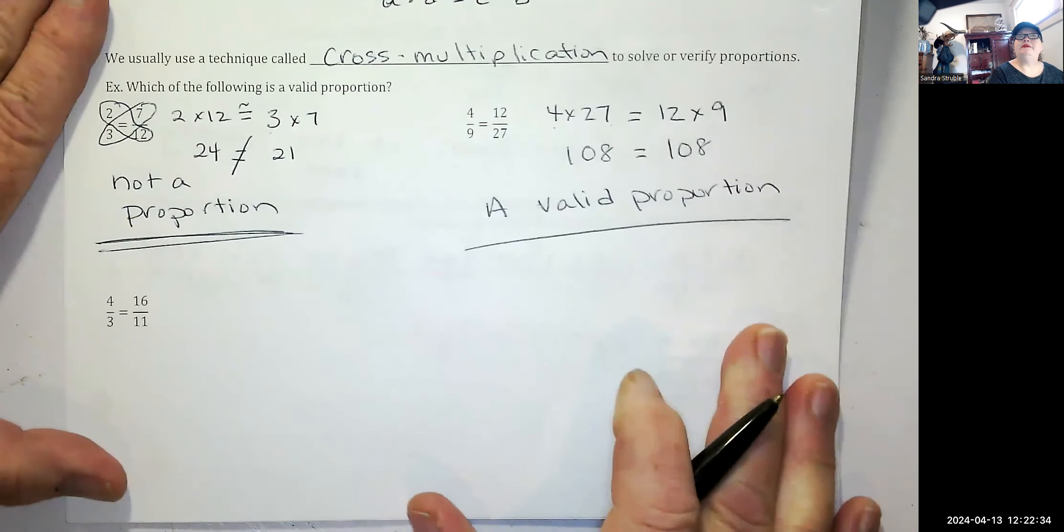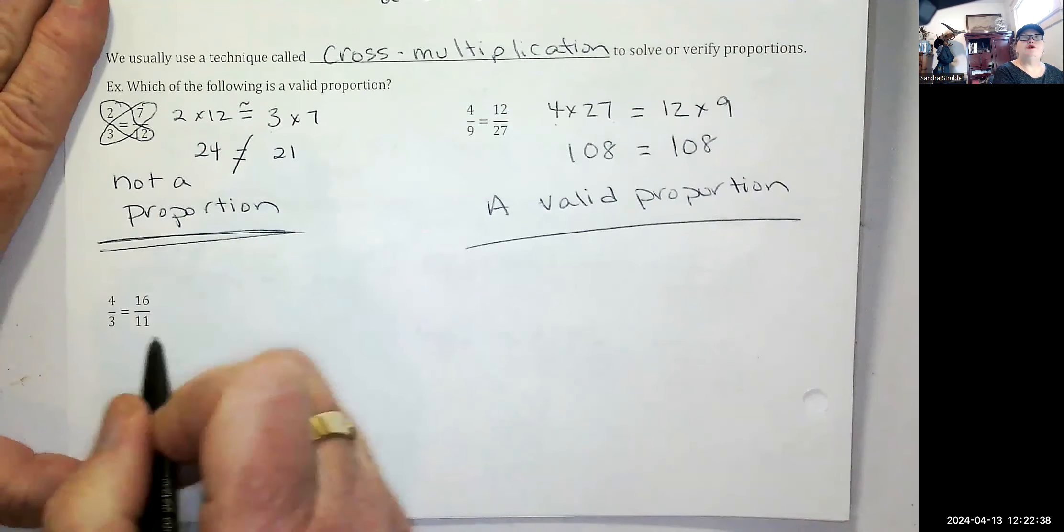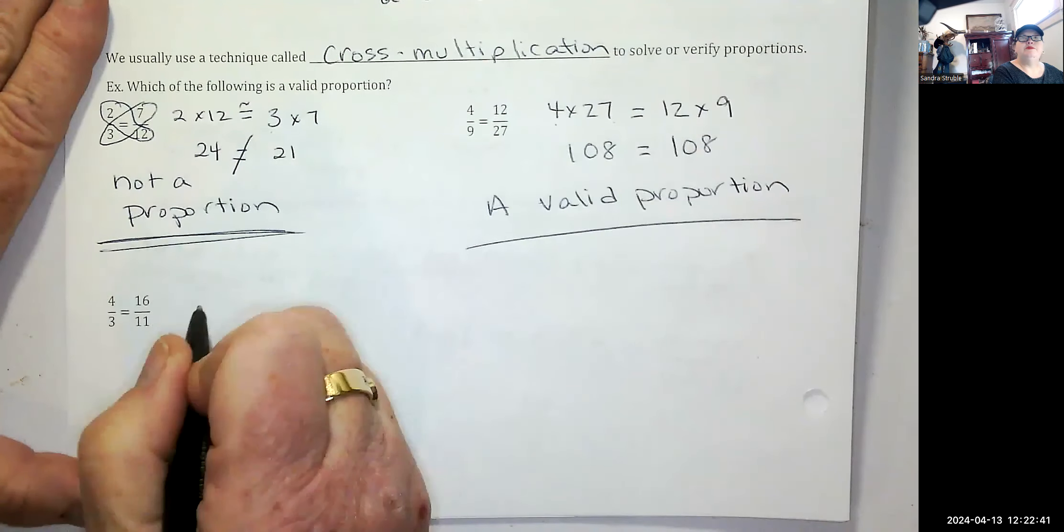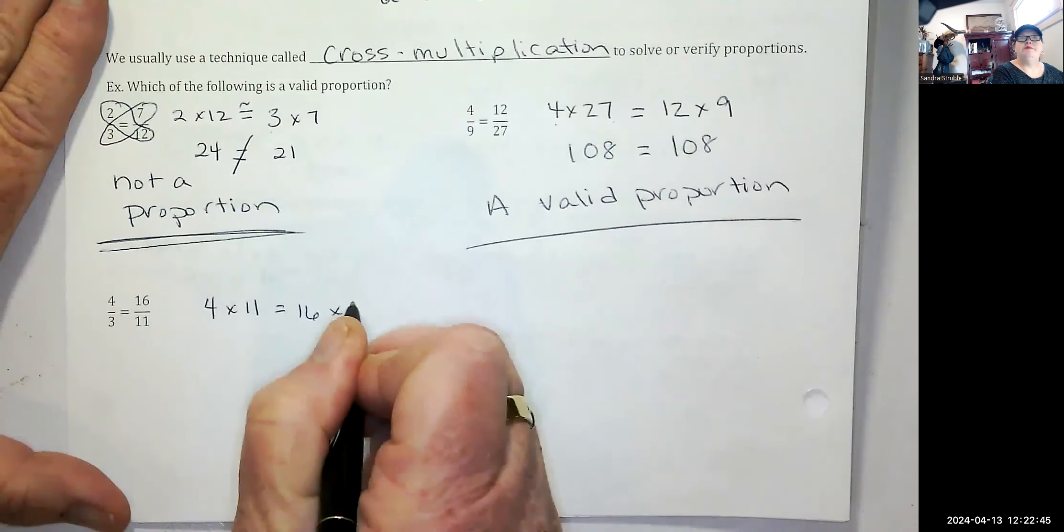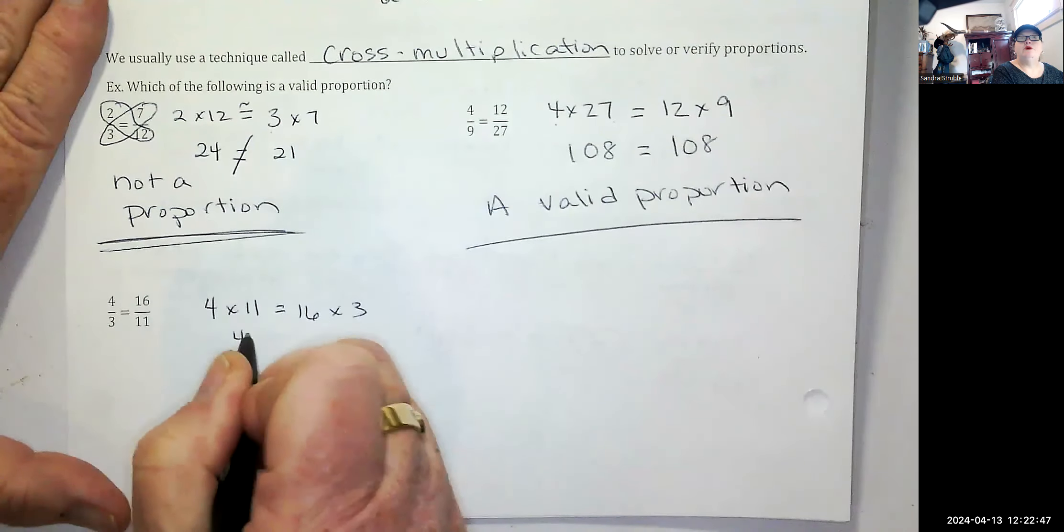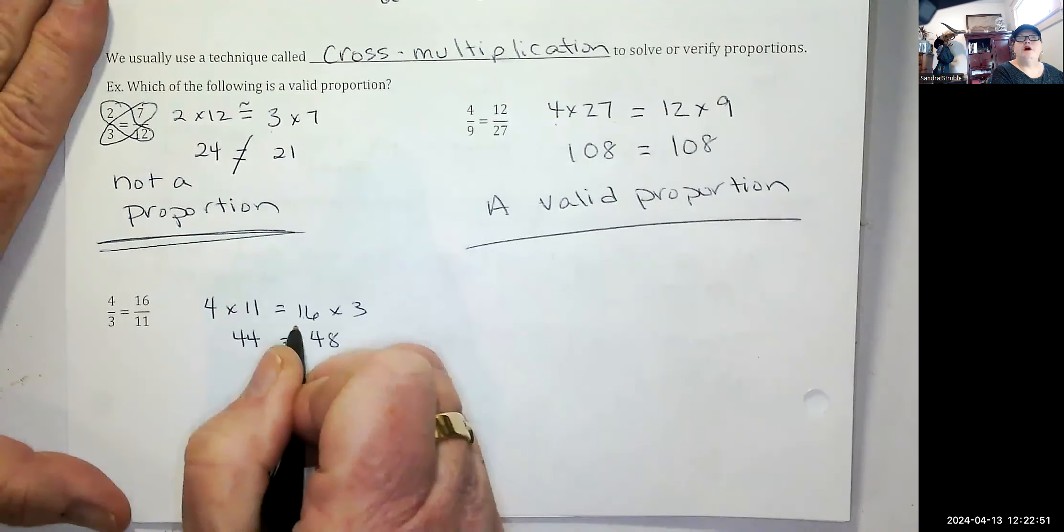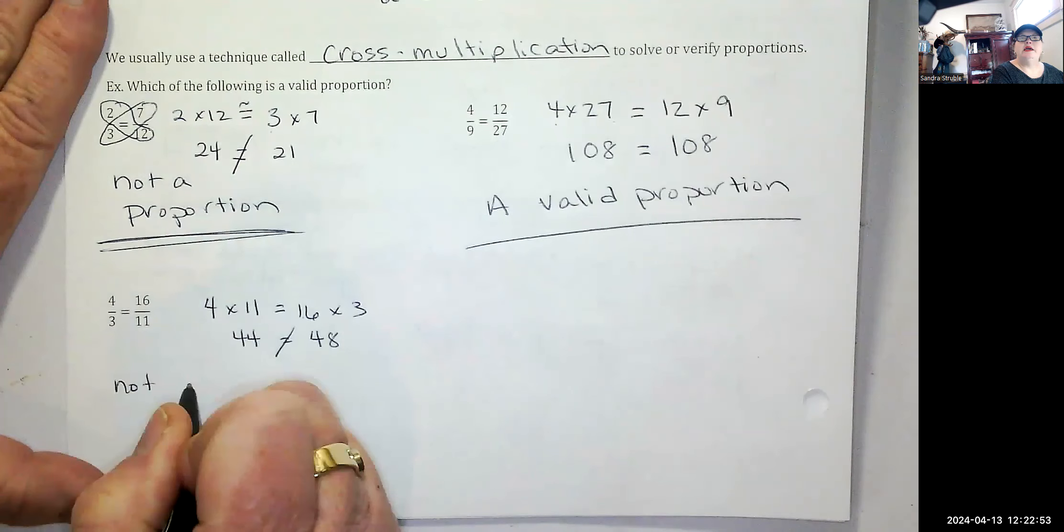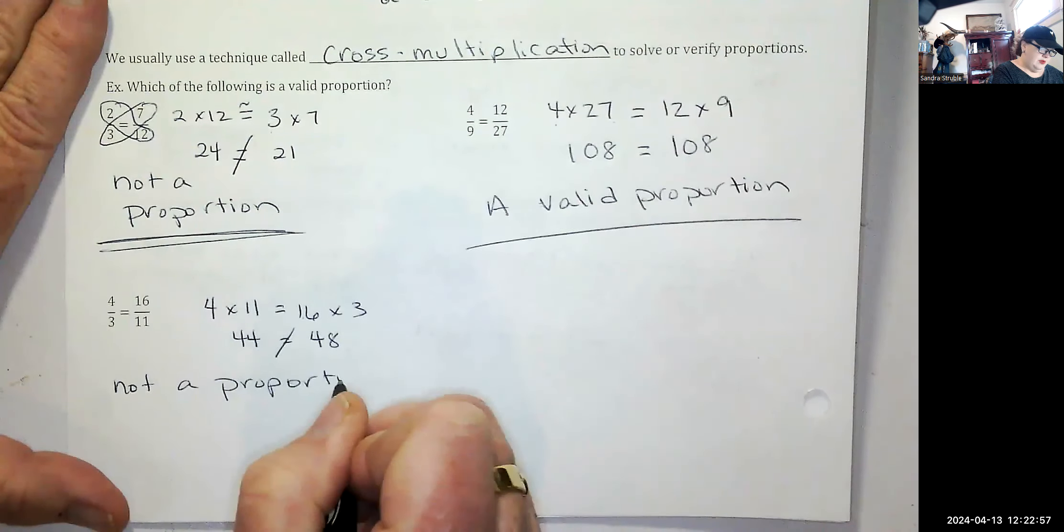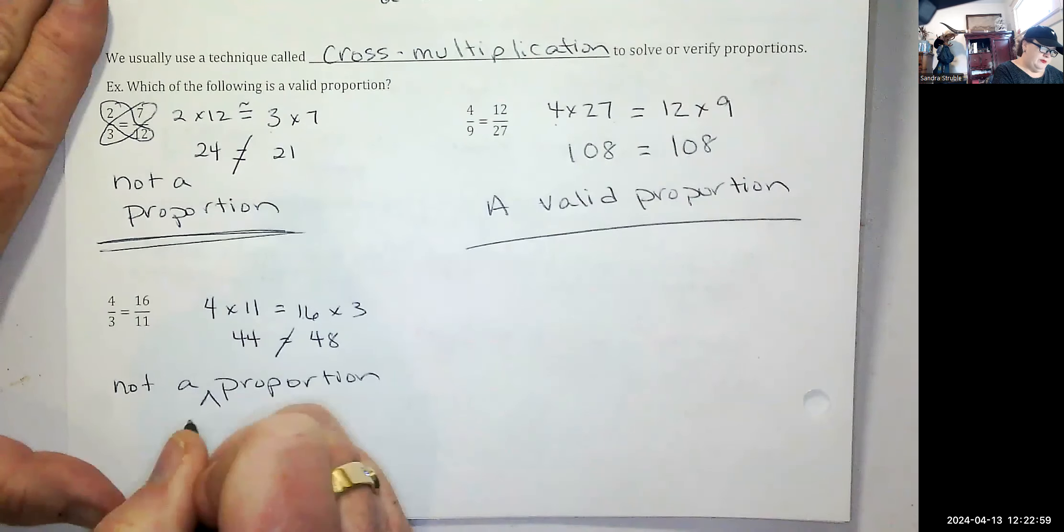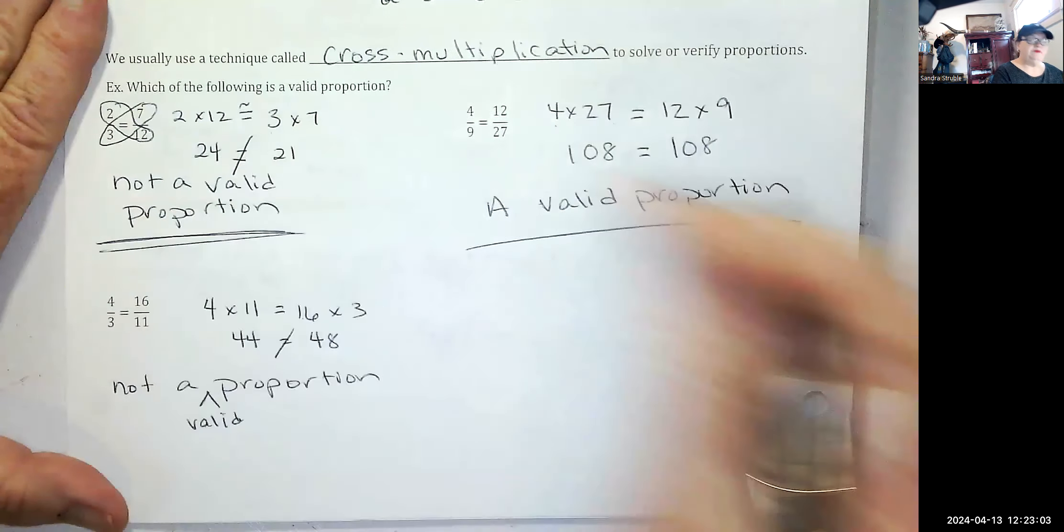Pause the video and attempt this next one to see if they are a proportion. Four is to three as 16 is to 11. So four times 11, is it equal to 16 times three? Four times 11 is 44. 16 times three is 48. They are not. So this is not a valid proportion.